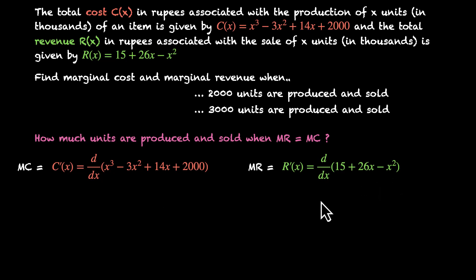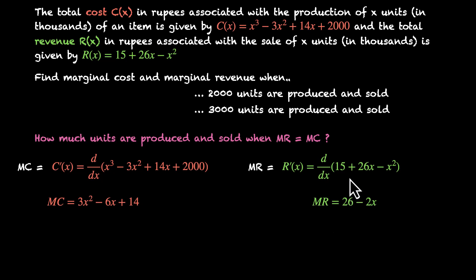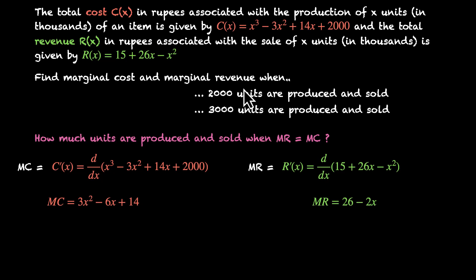These are polynomial functions, so straightforward differentiation gives us marginal cost and marginal revenue. Marginal cost is 3x² - 6x + 14 (since the derivative of x³ is 3x², and the constant 2000 differentiates to 0). Marginal revenue is 26 - 2x (the derivative of 15 is 0). These are the two functions we'll work with going forward.